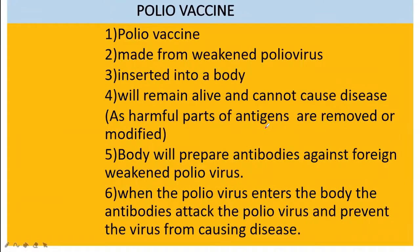Vaccine production is the same as rDNA technology. Let's take the example of polio vaccine — how we can artificially produce it. In polio vaccine production, the polio virus is there. The polio vaccine is made from a weakened polio virus. This polio virus is toxic only because of the presence of its antigen.